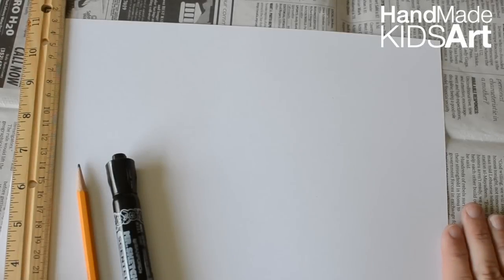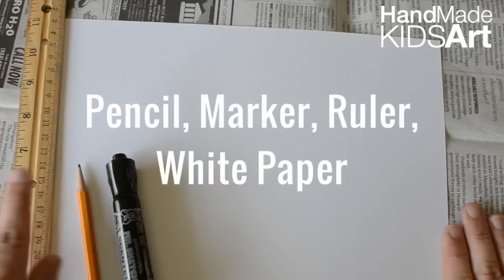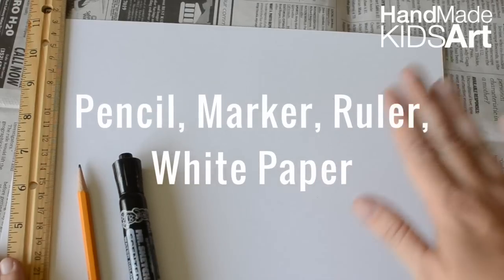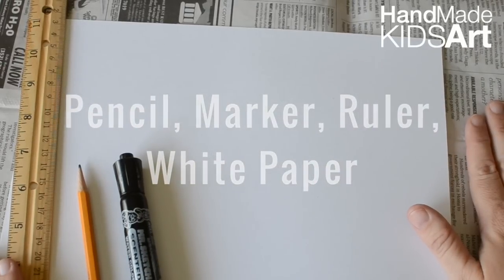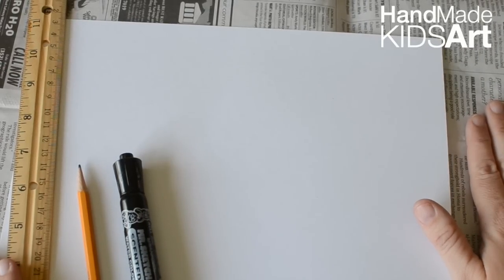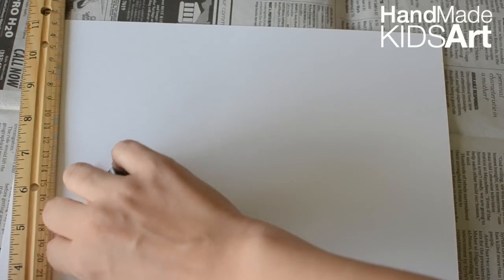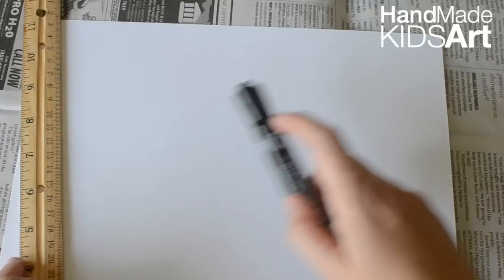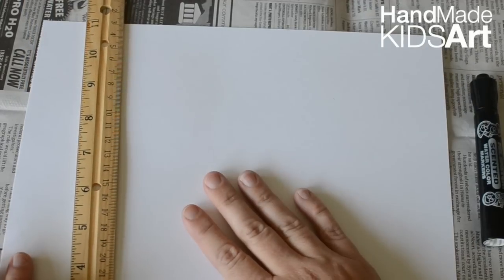Alright, so I have gathered all my materials. I have my pencil, marker, ruler, white paper. I have newspaper underneath my white paper to help protect my workspace. So if you're working on the table, you may want to put a different piece of paper underneath in case you color off it.